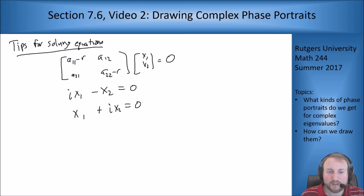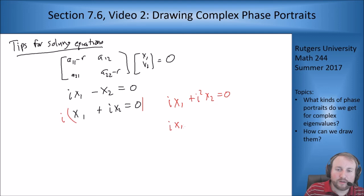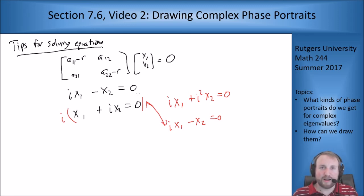Why are they the same equation? Because what happens if I multiply the second equation by i? If I multiply this equation here by i, what do I get? I get i x1 plus i squared x2 equals 0. But i squared is negative 1. So i x1 minus x2 equals 0, which means this is redundant to the original equation.